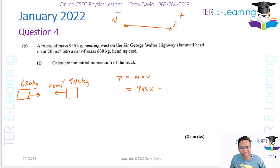So that's 945 multiplied by minus 20, which equals minus 18,900 kg m s to the minus 1. That's my answer for that part. Even if you don't have the negative sign, you're still going to get the mark. That negative sign is going to come into play further on in the question.